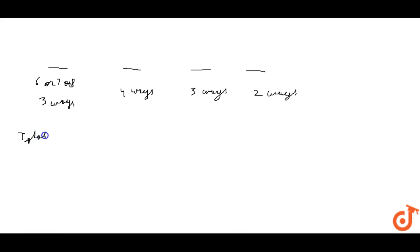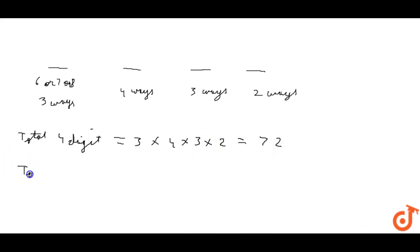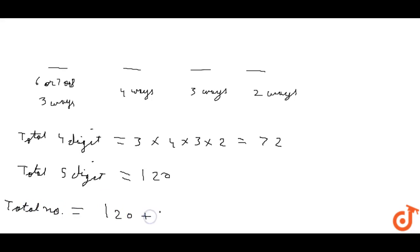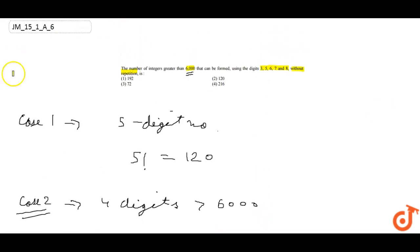So the total count of 4-digit numbers is 3 × 4 × 3 × 2 = 72. The total 5-digit numbers are 120. Therefore, the total numbers greater than 6000 will be 120 + 72 = 192. This is our answer, and option 1 is the correct choice.